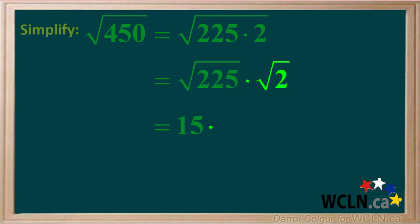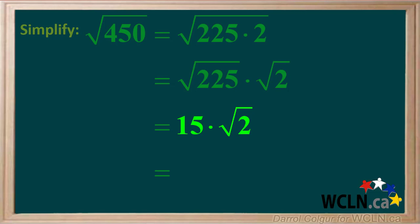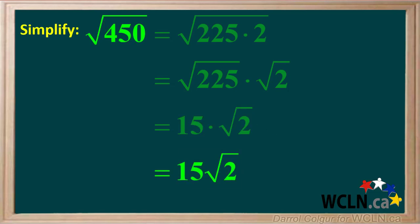The square root of 2 cannot be simplified anymore, so just bring it down. Now you're left with 15 times the square root of 2, which you can compact to 15 root 2. To summarize, the square root of 450 can be simplified to 15 root 2.